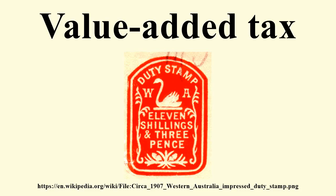Cash-basis accounting is a very simple form of accounting. When a payment is received for the sale of goods or services, a deposit is made and the revenue is recorded as of the date of receipt of funds, no matter when the sale had been made. Checks are written when funds are available to pay bills, and the expense is recorded as of the check date, regardless of when the expense had been incurred. The primary focus is on the amount of cash in the bank, and the secondary focus is on making sure all bills are paid. Little effort is made to match revenues to the time period in which they are earned, or to match expenses to the time period in which they are incurred.